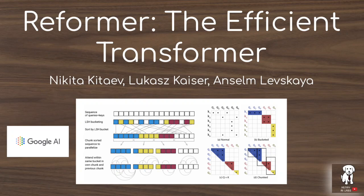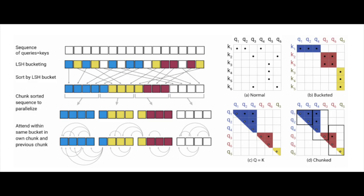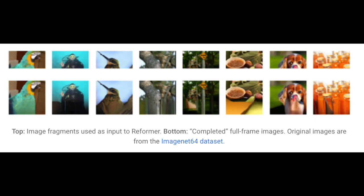This video will explore the new Reformer Efficient Transformer model from Google AI. This model is really interesting because it presents a way to approximate full attention over long sequences, as well as ideas to reduce the memory requirements of training transformer models.